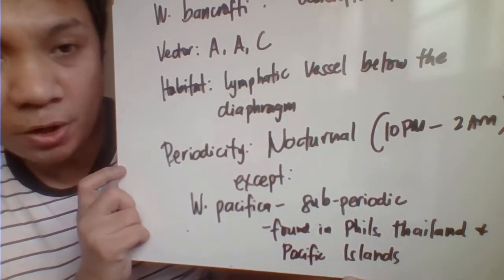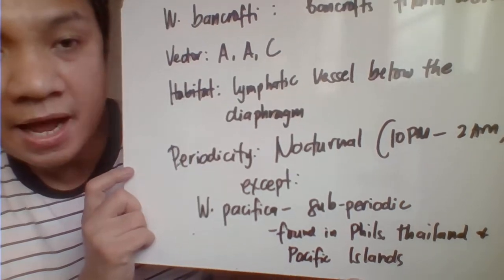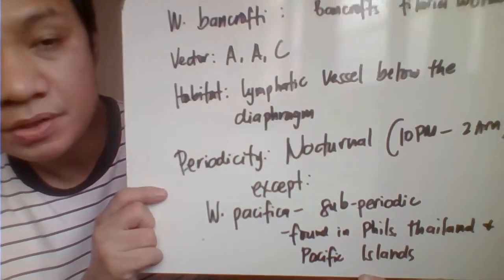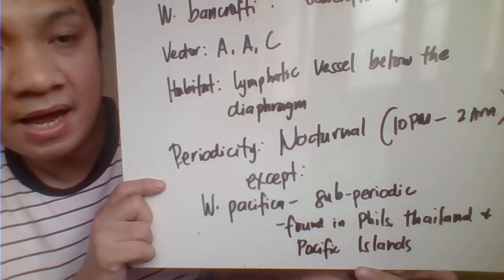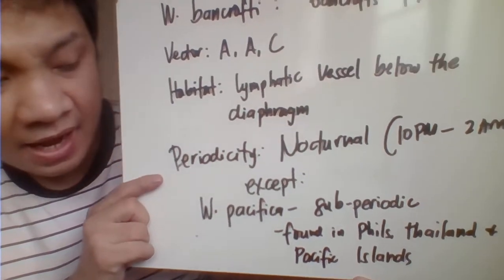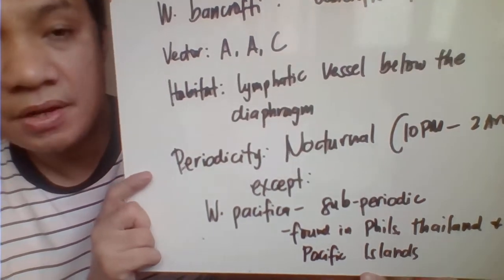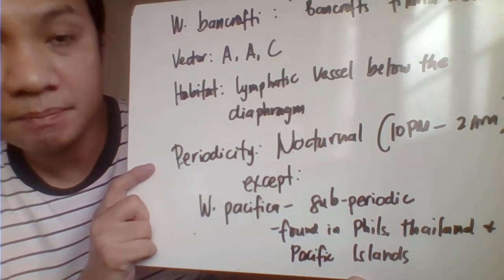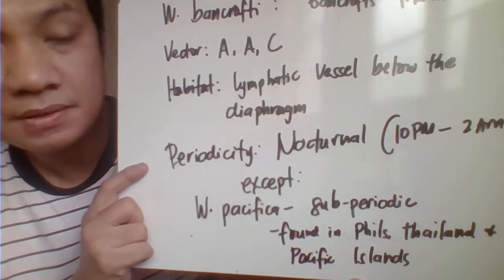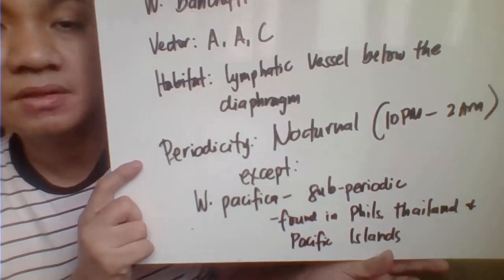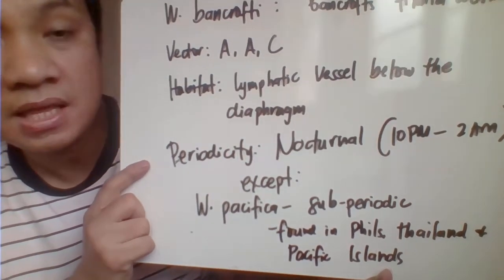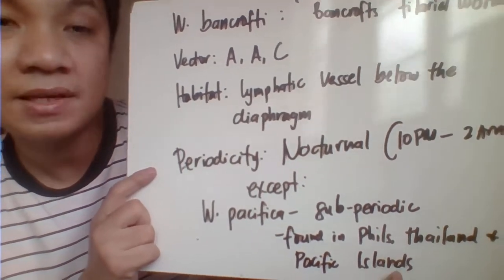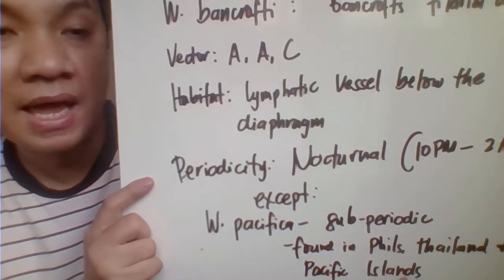An exception is Wuchereria pacifica, which has a subperiodic periodicity. Wuchereria pacifica is very prevalent in the Pacific Islands, including the Philippines and Thailand.